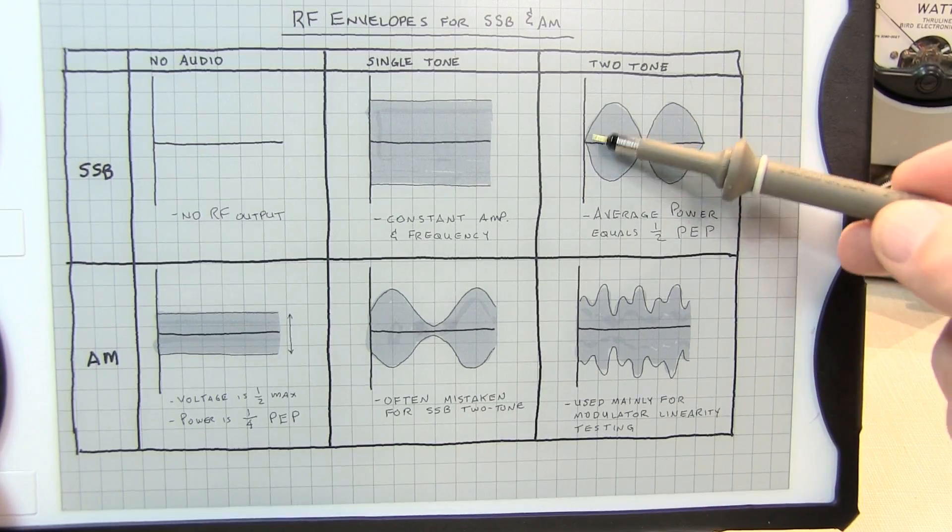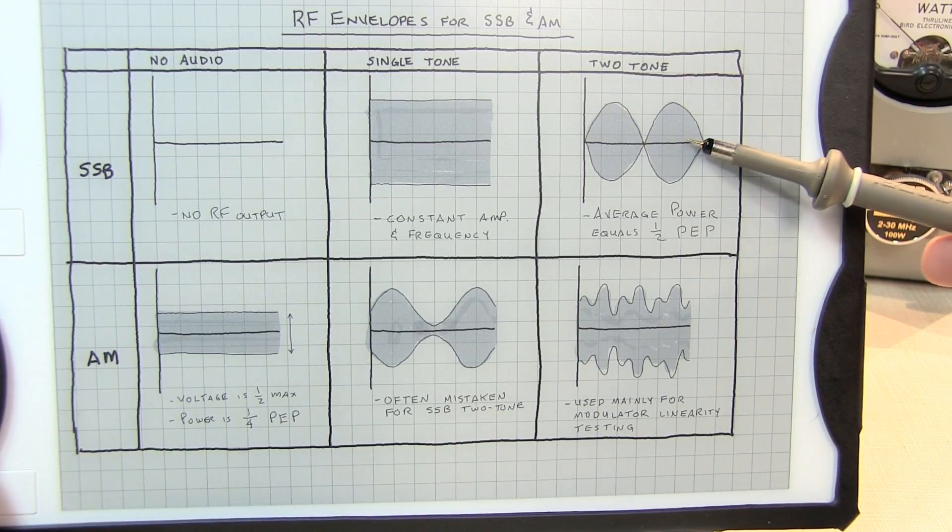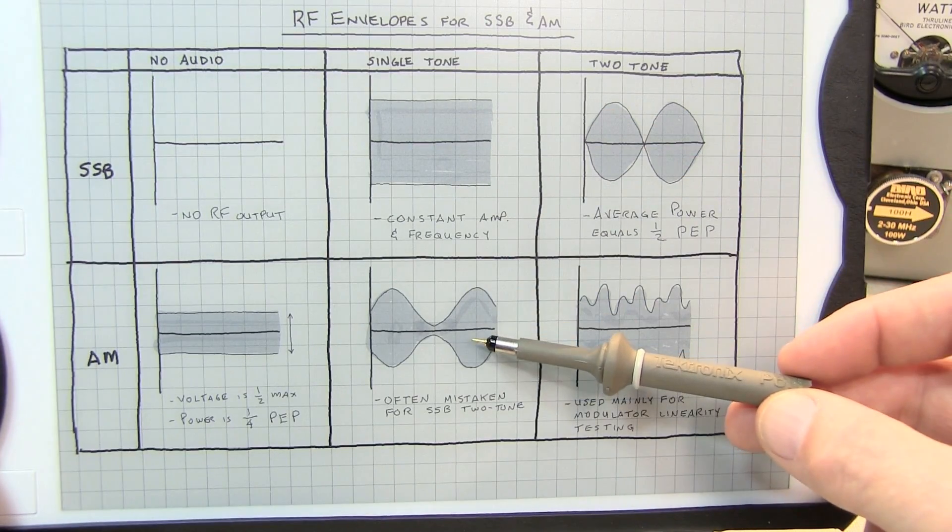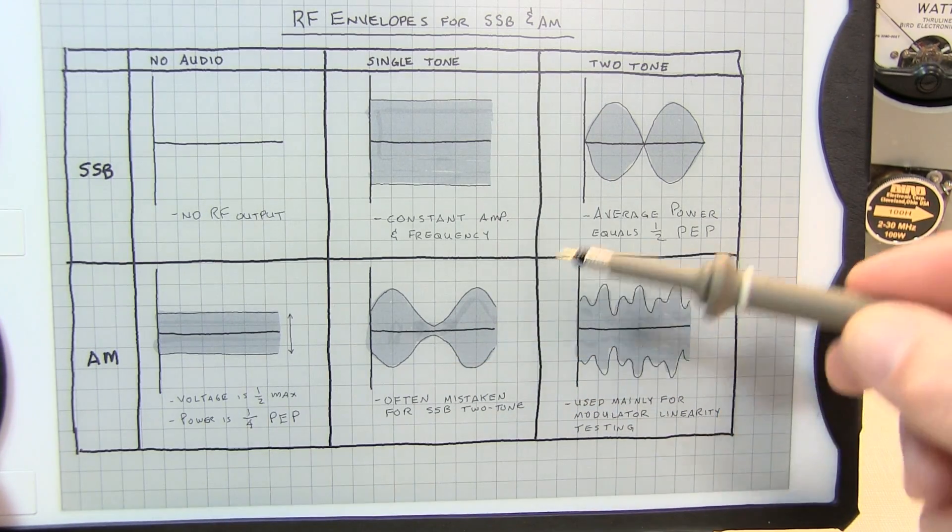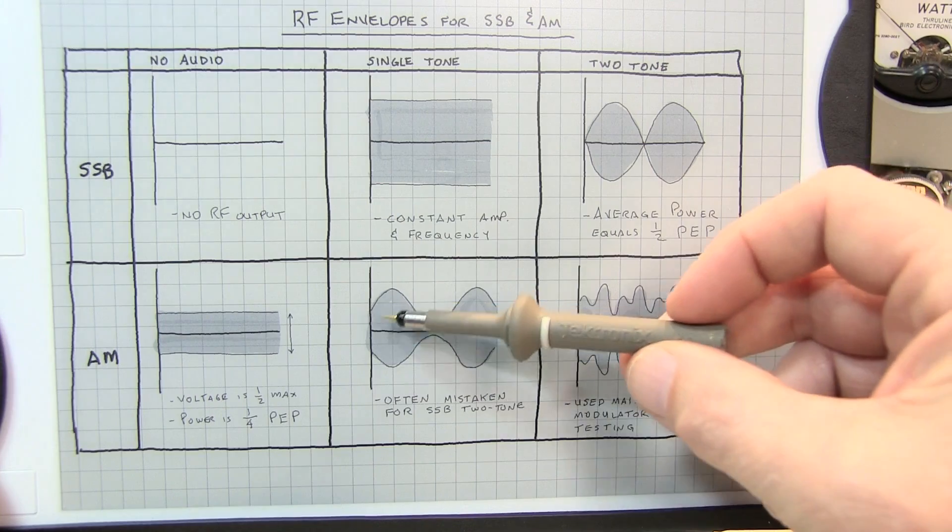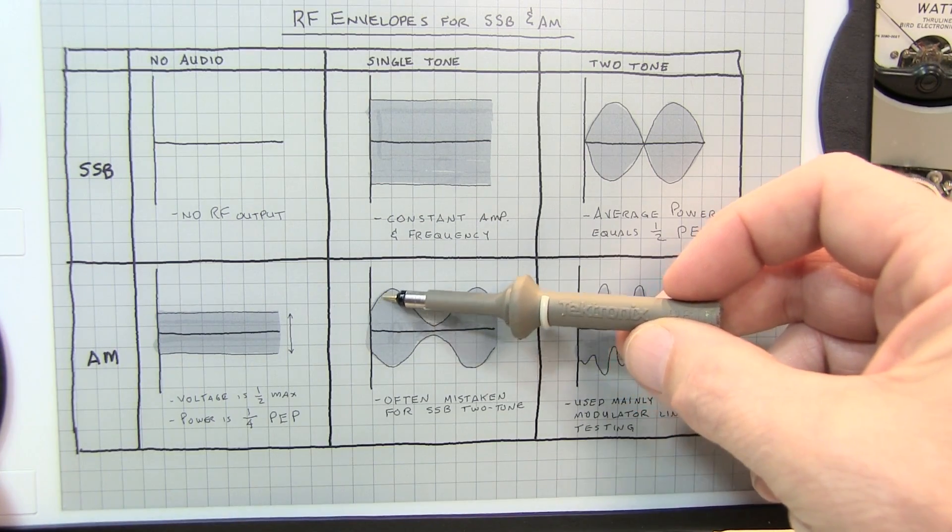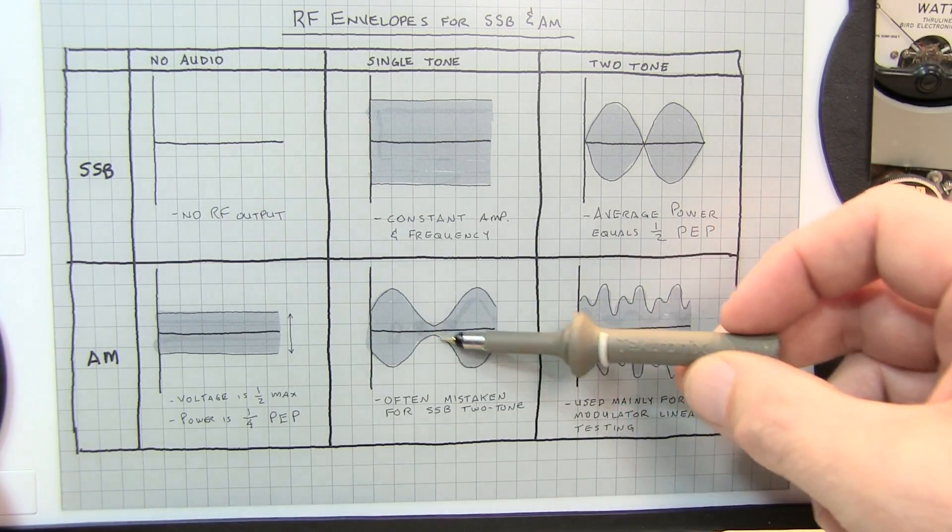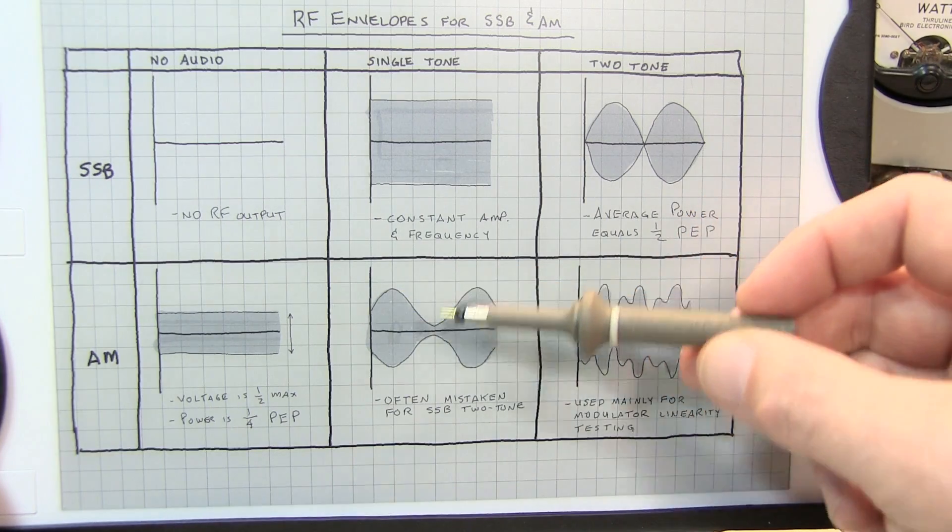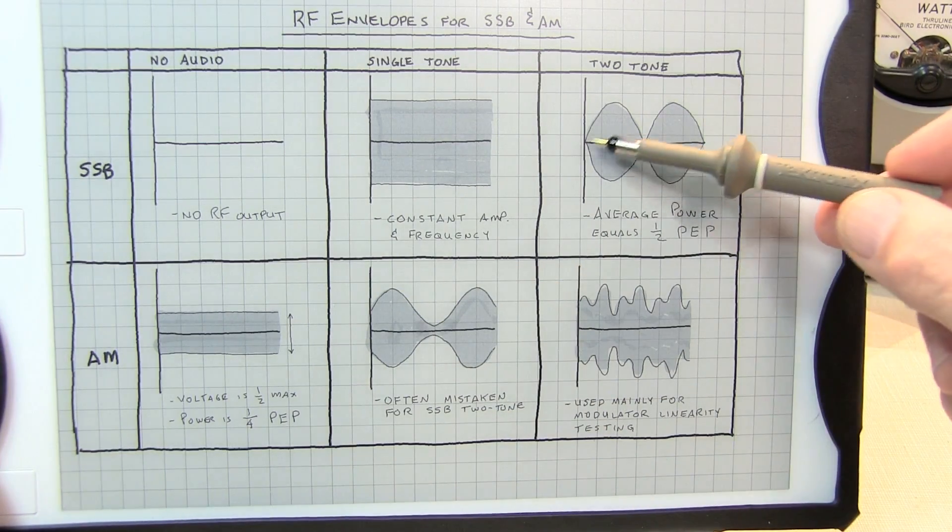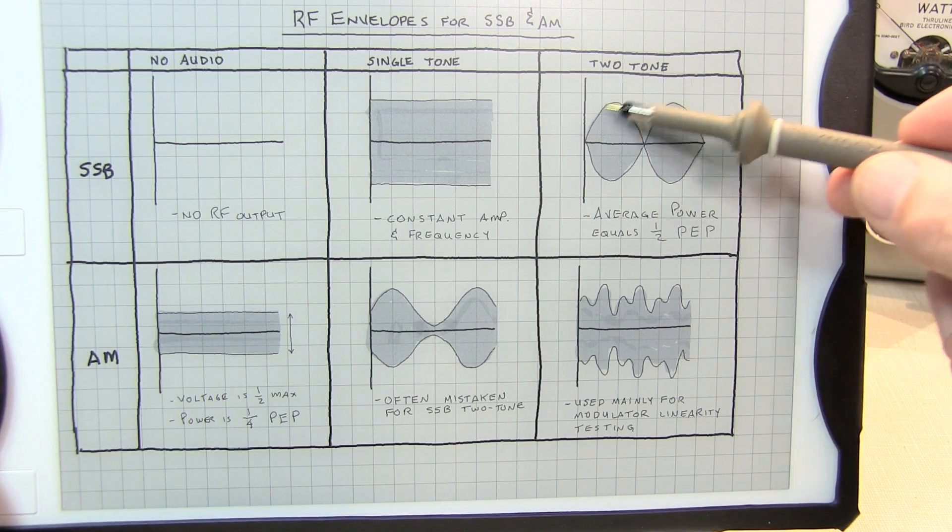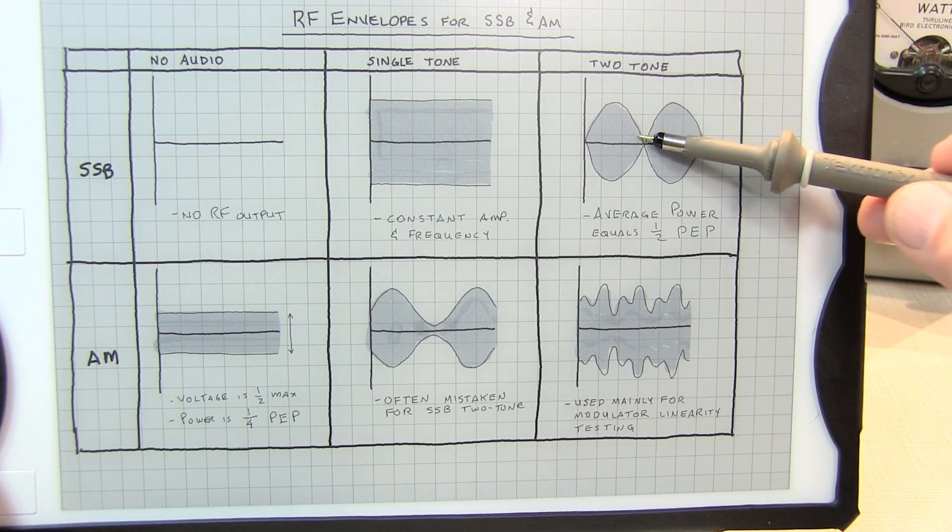Now, oftentimes, people will confuse this two-tone single sideband envelope with a single-tone AM envelope, but they actually are different for an important reason. If you take a look at the shape of this, the upper and lower envelopes are both sinusoidal shapes, mirror images of each other. In the case of the single sideband signal, these upper and lower envelopes are still mirrors of each other, but they're essentially half sines.